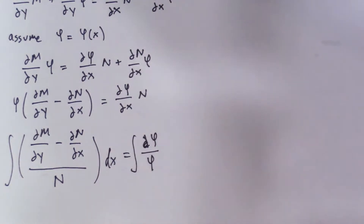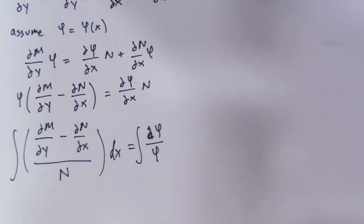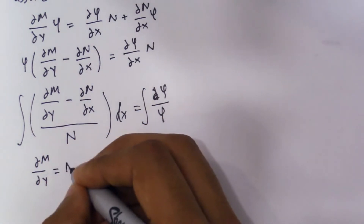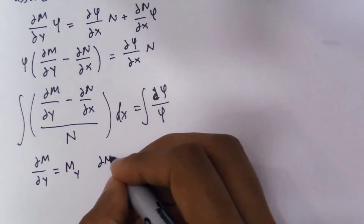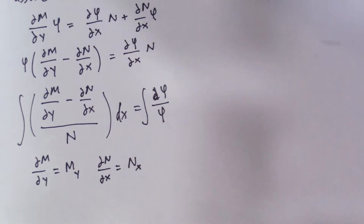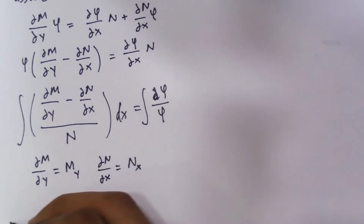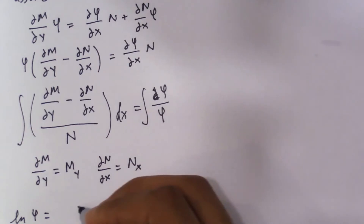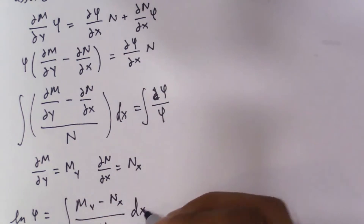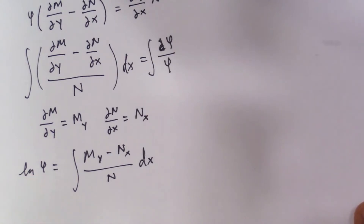We take the integral of both sides. Using subscript notation, the partial of M with respect to y is M-sub-y, and the partial of N with respect to x is N-sub-x. Integrating the left side gives ln of phi, so: ln(phi) equals the integral of (M-sub-y minus N-sub-x) over N, dx. Then you exponentiate both sides to get phi, which is your integrating factor that makes the equation exact. You can then go through the regular steps of solving an exact differential equation.